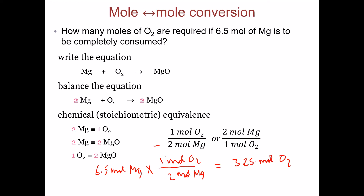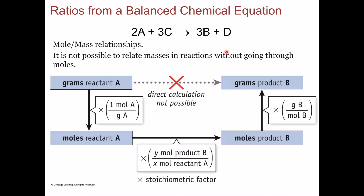Adding 3.25 moles of oxygen to 6.5 moles of magnesium leads to a complete reaction. These coefficient ratios in any balanced chemical equation serve as conversion factors in mole-to-mole-to-gram conversions. We cannot convert grams of one substance directly to grams of a second substance — the conversion must go through the mole-to-mole ratio from the coefficients in the balanced equation.